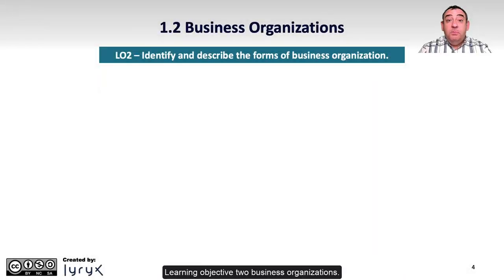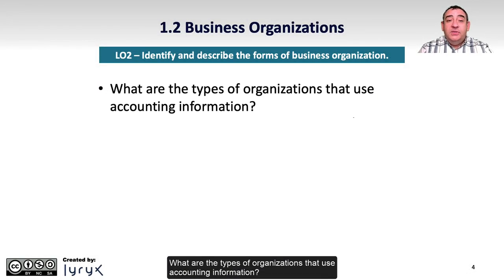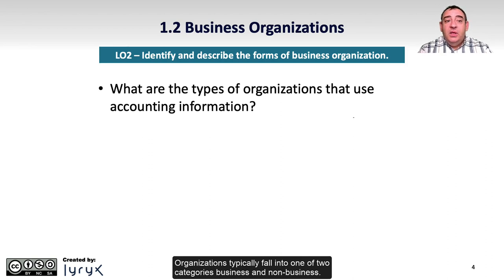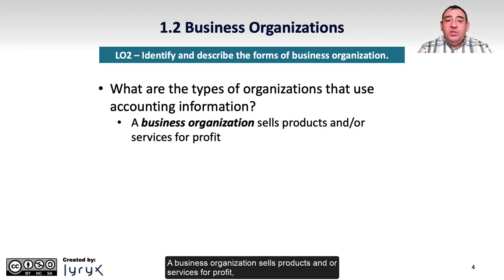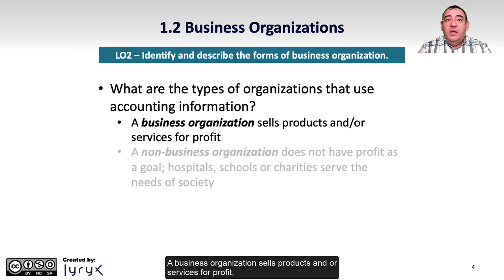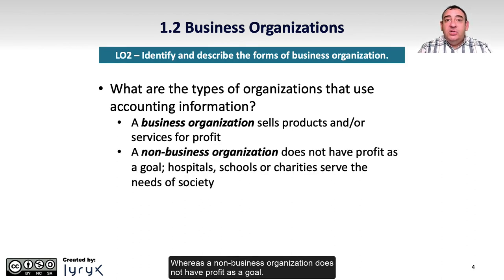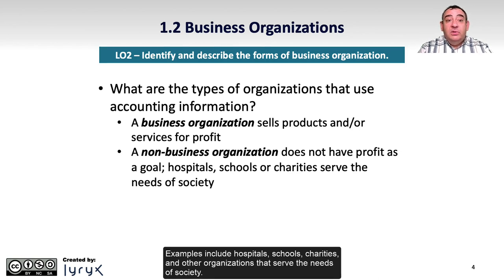Learning Objective 2 – Business Organizations: What are the types of organizations that use accounting information? Organizations typically fall into one of two categories – business and non-business. A business organization sells products and/or services for profit, whereas a non-business organization does not have profit as a goal. Examples include hospitals, schools, charities, and other organizations that serve the needs of society.